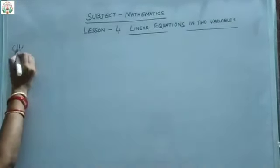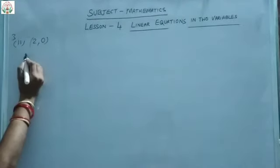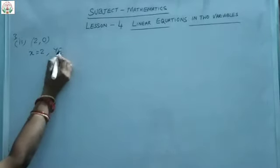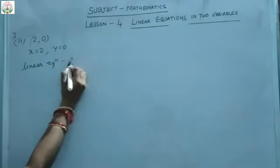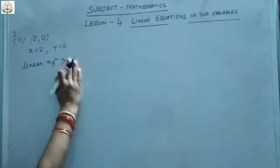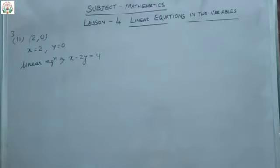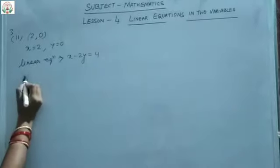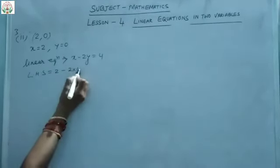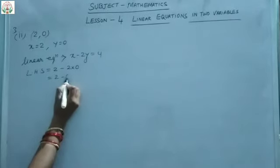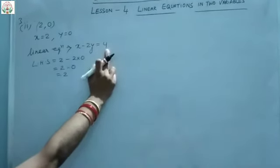The second part of the question is the point (2, 0). In this case, x equals 2 and y equals 0. Our linear equation is x minus 2y equals 4. Now put the values of x and y: LHS equals 2 minus 2 into 0, which equals 2 minus 0, equals 2. But the RHS given is 4. So is LHS equal to RHS?